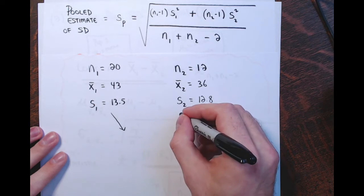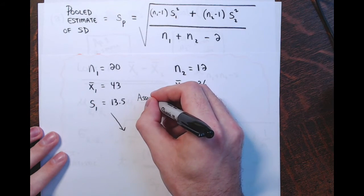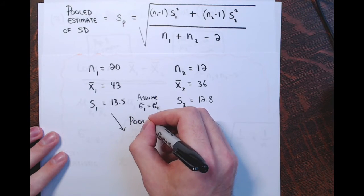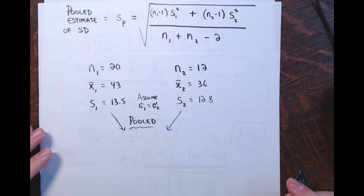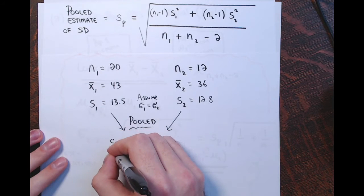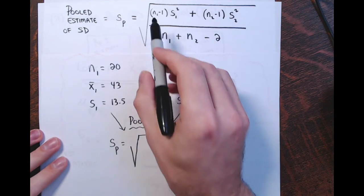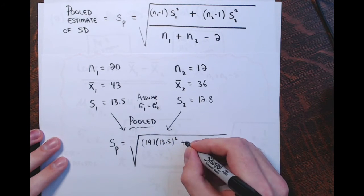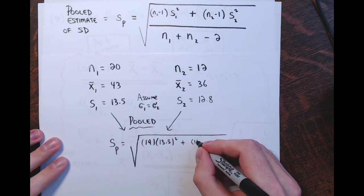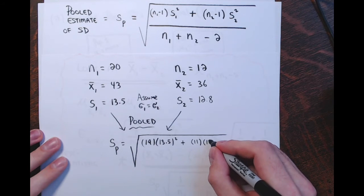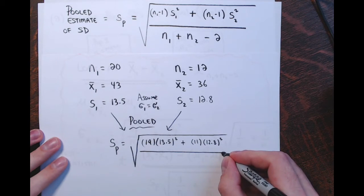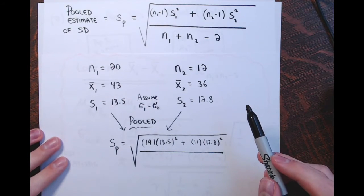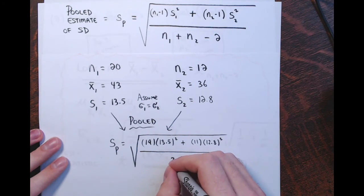Because we're assuming the population standard deviations are equal, we're going to pool these together and create the pooled estimate SP. Using the formula, it's the square root of: (N1 minus 1) times S1 squared plus (N2 minus 1) times S2 squared, all divided by (N1 minus 1) plus (N2 minus 1). So that's the square root of (19 times 13.5 squared plus 11 times 12.8 squared) divided by 30, since N1 plus N2 minus 2 equals 30.